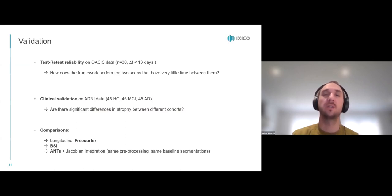At first, we evaluate test-retest reliability on 30 subjects in the OASIS dataset, with two scans less than 13 days apart. The question here is how the framework performs on two scans that have very little time between them, with expected atrophy for such a short time span being close to 0%.